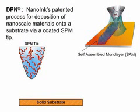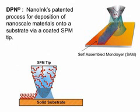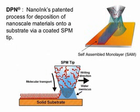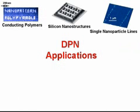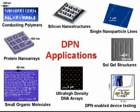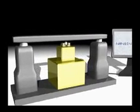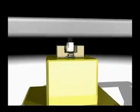Strictly defined, dip pen nanolithography is NanoInk's patented process for deposition of nanoscale materials onto a substrate via a coated SPM tip. But DPN also represents untold possibilities and potentials on the nanoscale. The following simulation serves to clarify how NanoInk harnesses the potentials of nanoscale lithography.